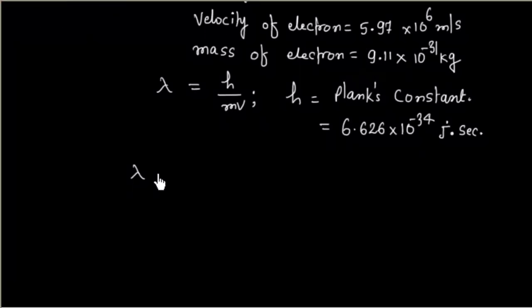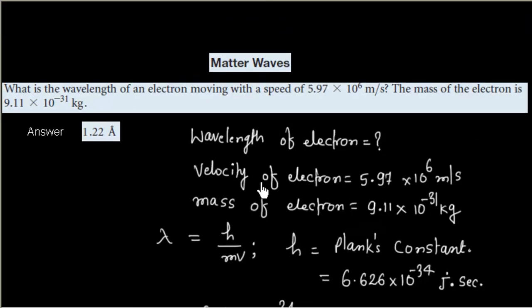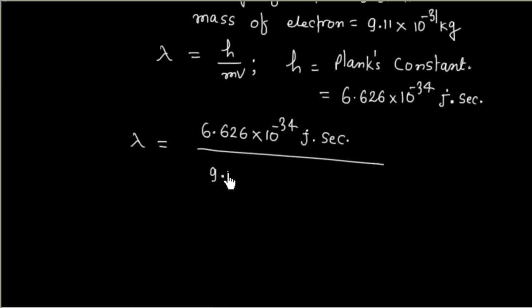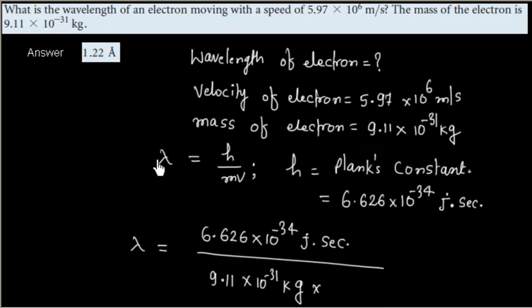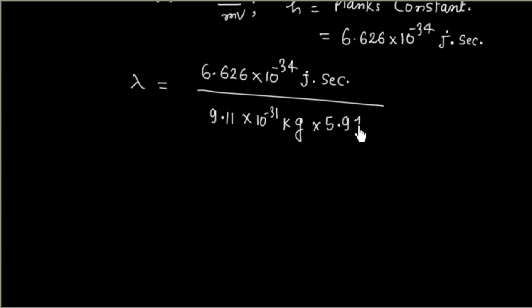Now if I plug all these values: h is 6.626 × 10⁻³⁴ Joule·second, divided by mass into velocity. Mass is 9.11 × 10⁻³¹ kg, multiplied by velocity 5.97 × 10⁶ meter per second.